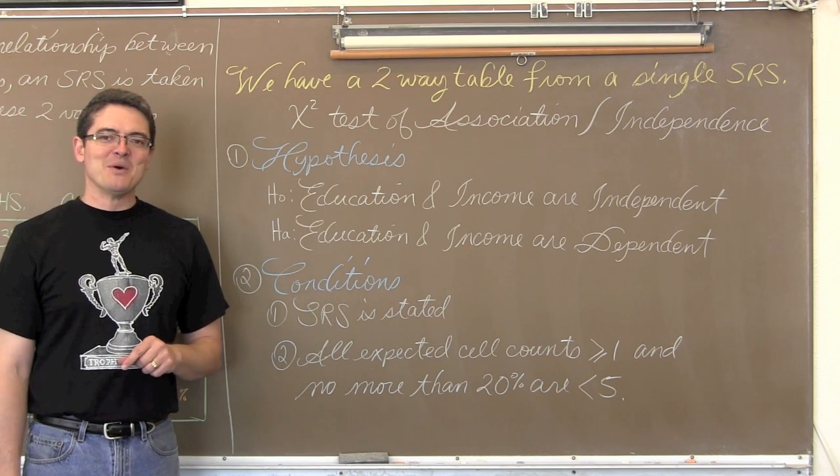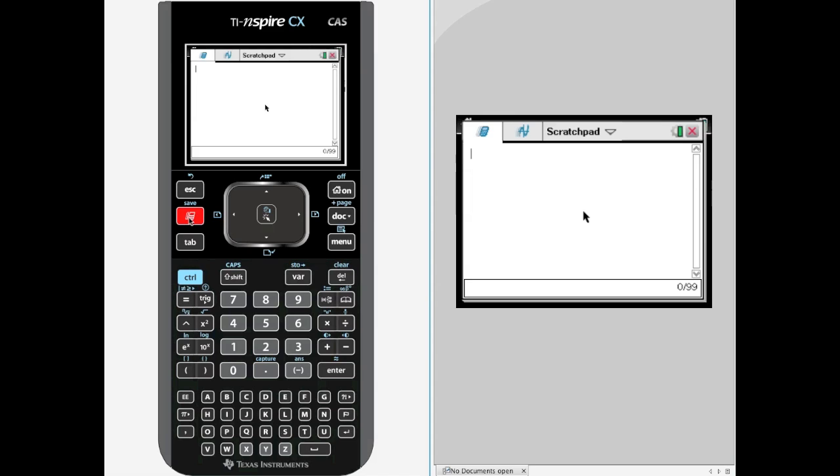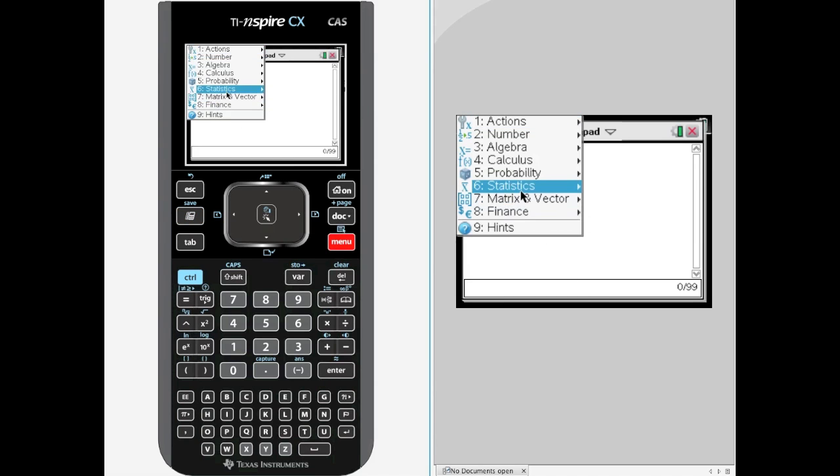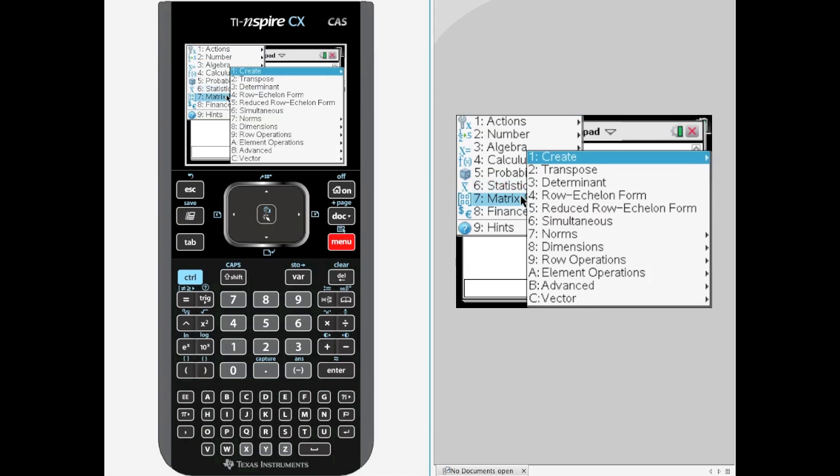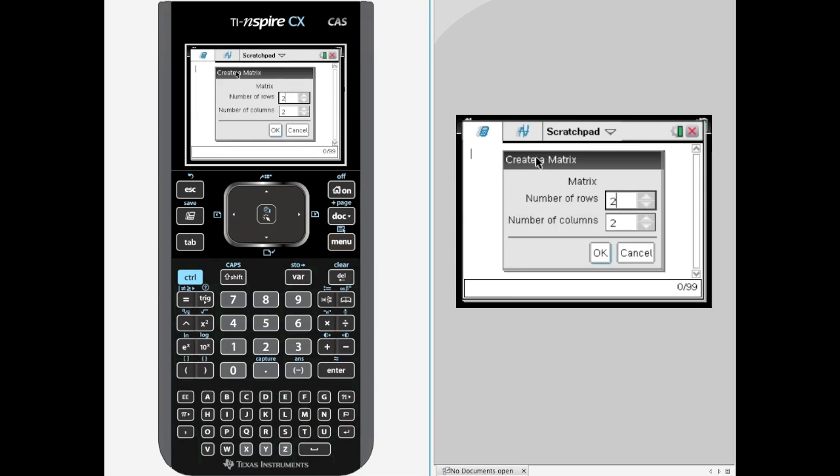So one last screen and we will be done with this example. We are going to get our TI Inspire turned on, and there is no reason to start a new document for this. We are just going to use the scratch pad. So let me tab on this button here, hit menu, and go to matrix vector, create a new matrix, and select number one. Now what size do you like this matrix to be?